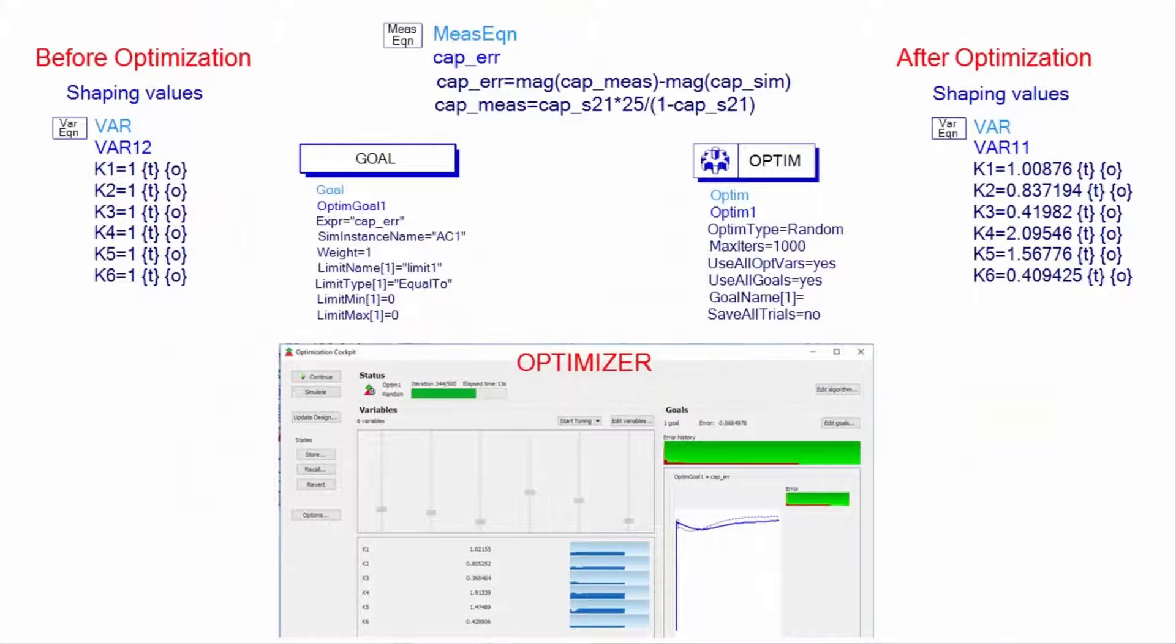The two-port S21 capacitor measurement is transformed to impedance, and an error term is defined as the difference between the simulation and the measurement results. An optimizer goal is set to minimize this error term.